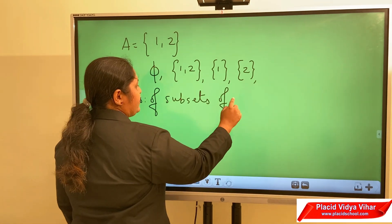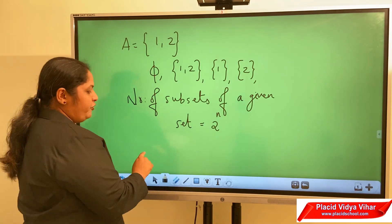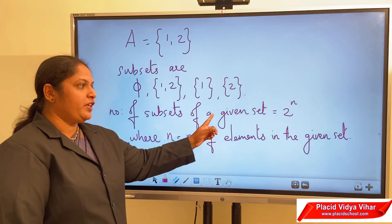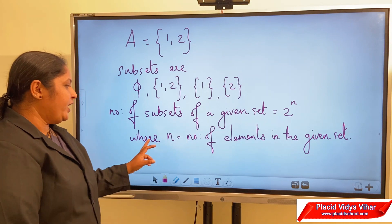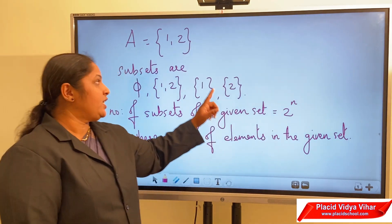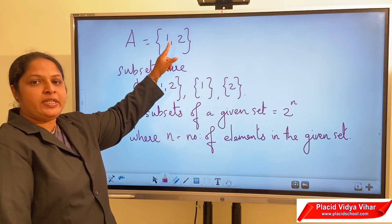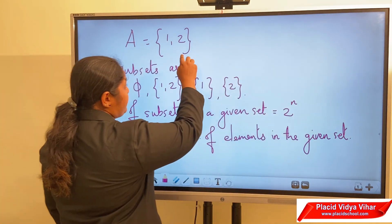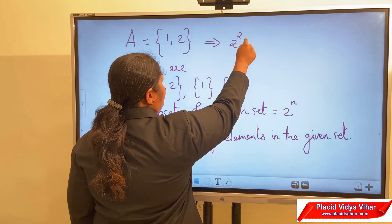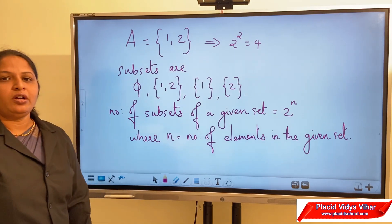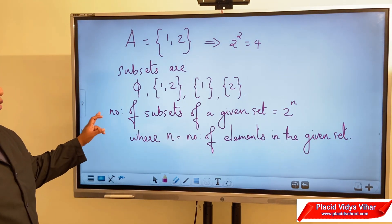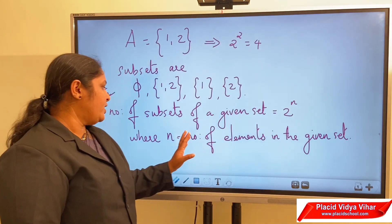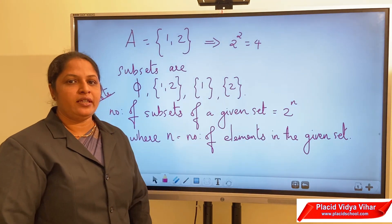The number of subsets of a given set is equal to 2 raised to n, where n is the number of elements in the set. For this set with 2 elements, the number of subsets is 2 raised to 2, which equals 4. Please write this as a note: the number of subsets of a given set equals 2^n, where n is the number of elements.